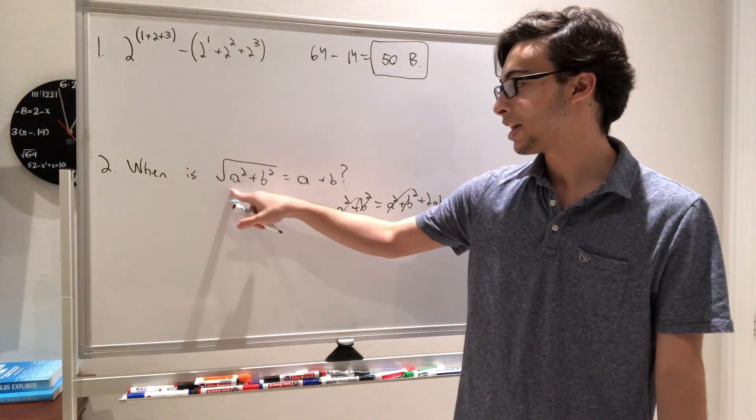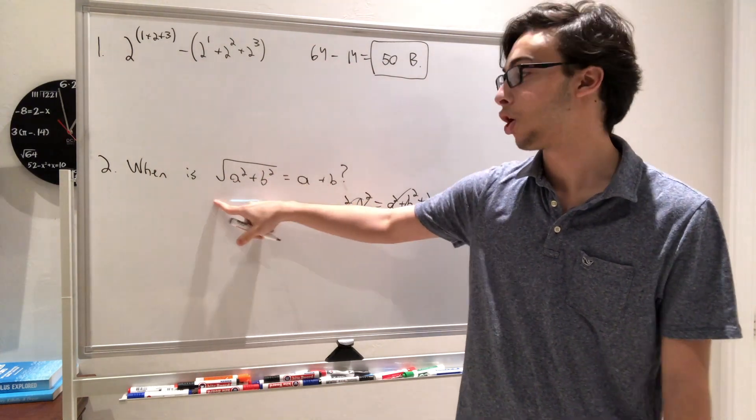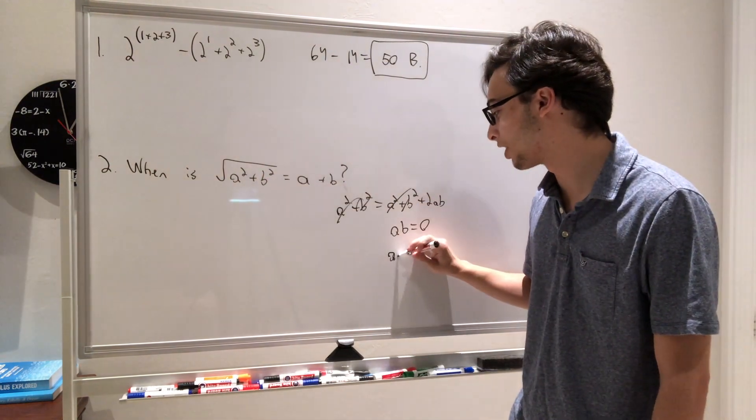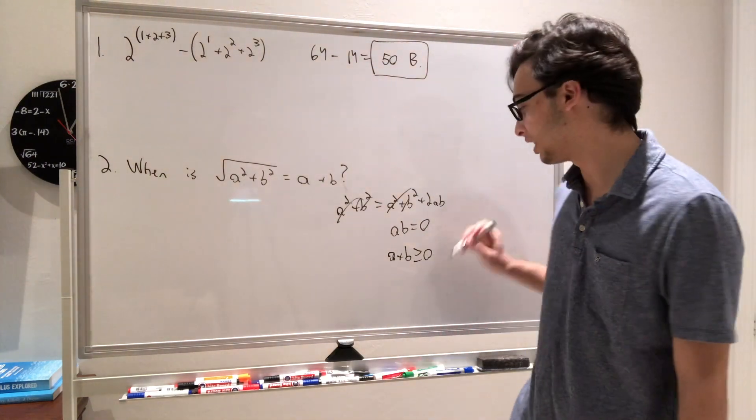Because if you look, we have a squared plus b squared is always positive, and when you take the square root of that, you're going to get something that's always positive. So we also have that a plus b must always be greater than or equal to 0. And so now that we have these equations, we're done, and the answer choice is D.